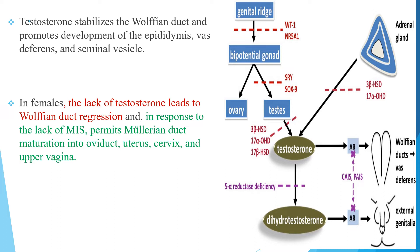In females, the lack of the XY chromosome causes lack of testosterone due to absence of testes, leading to Wolffian duct regression. In response to the lack of Müllerian inhibiting substance, the Müllerian ducts are permitted to mature into the oviduct, uterus, cervix, and upper vagina.